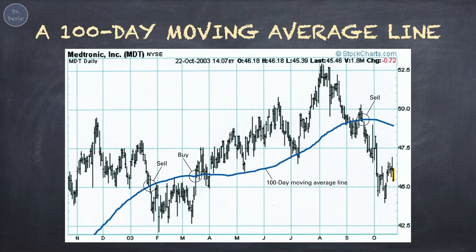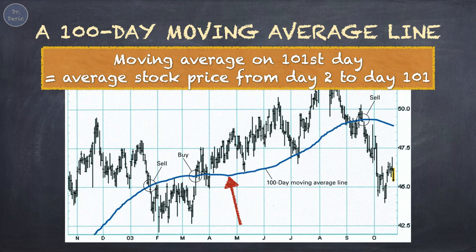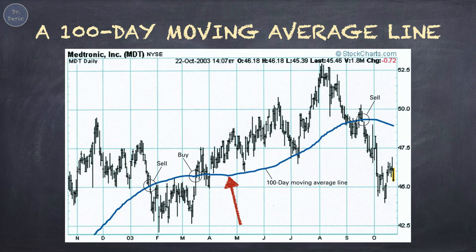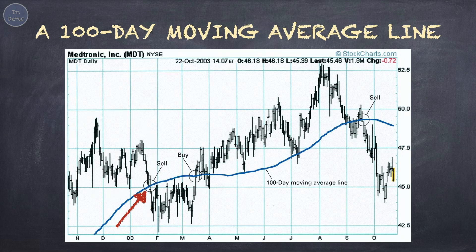The blue color line in this graph is a 100-day moving average line. To calculate the moving average on the 100th day, we include the stock prices from day 1 to day 100. For the moving average on the 101st day, we include stock prices from day 2 to day 101. Then, plotting all the moving average points on the graph, we get the moving average line. On the moving average line, the first intersection point of the stock price bar and the moving average line provides a sell signal. This is because, to the left of the intersection point, stock prices are all above the moving average, whilst to the right of the intersection point, stock prices are all below the moving average. So, at the intersection point, investors should sell the stocks to avoid losses in the future.